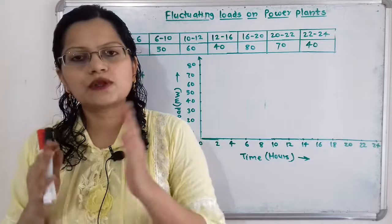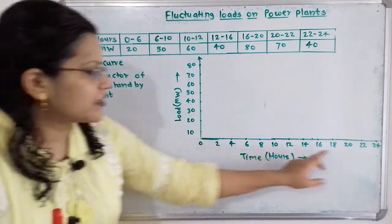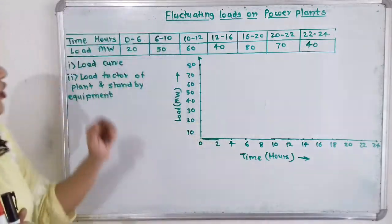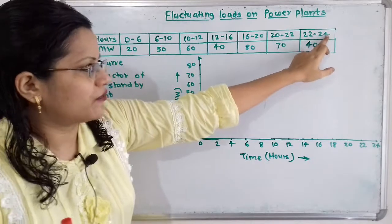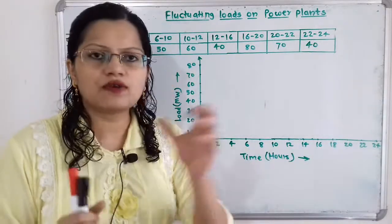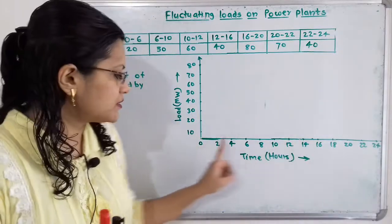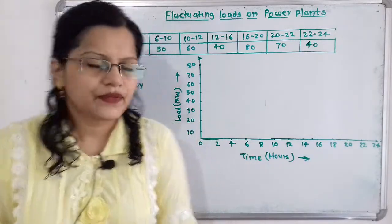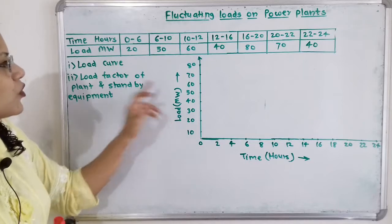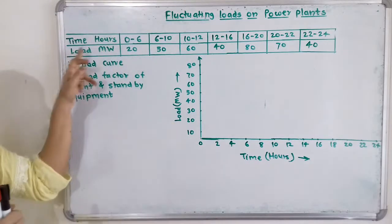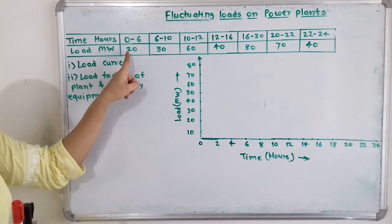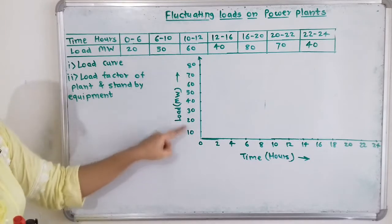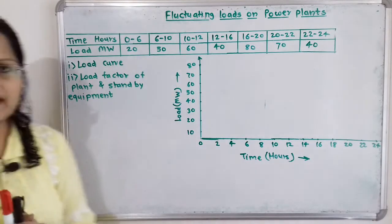To draw this load curve, we take time in hours on the horizontal axis — total time period is 24 hours, so we plot from 0 to 24. On the vertical axis we take the load in megawatt. Here the maximum load is 80, so from 0 to 80 with a particular scale we plot 10, 20, 30, up to 80 megawatt.